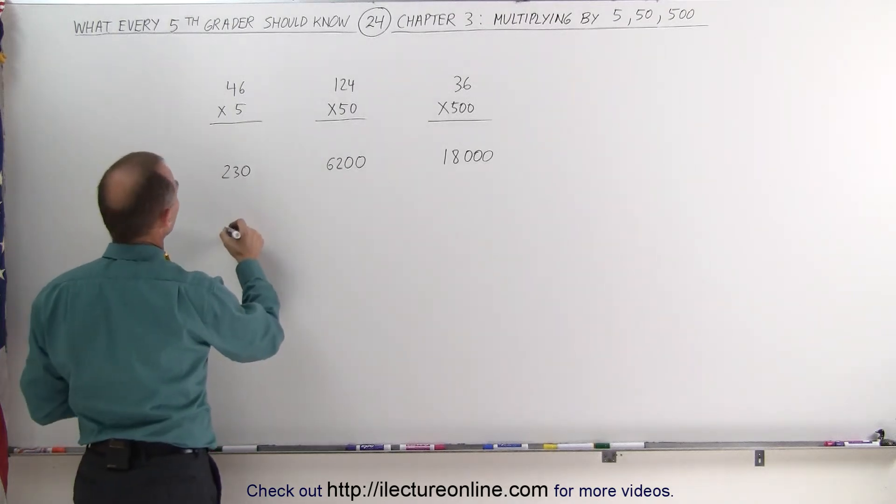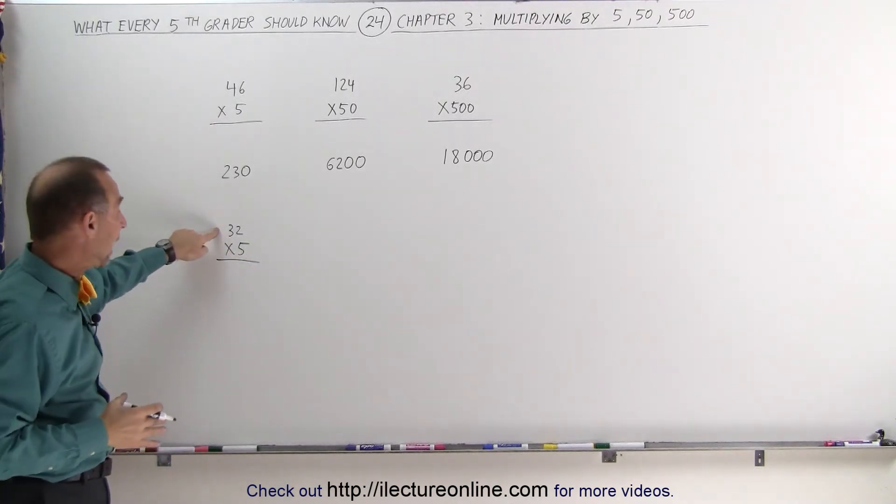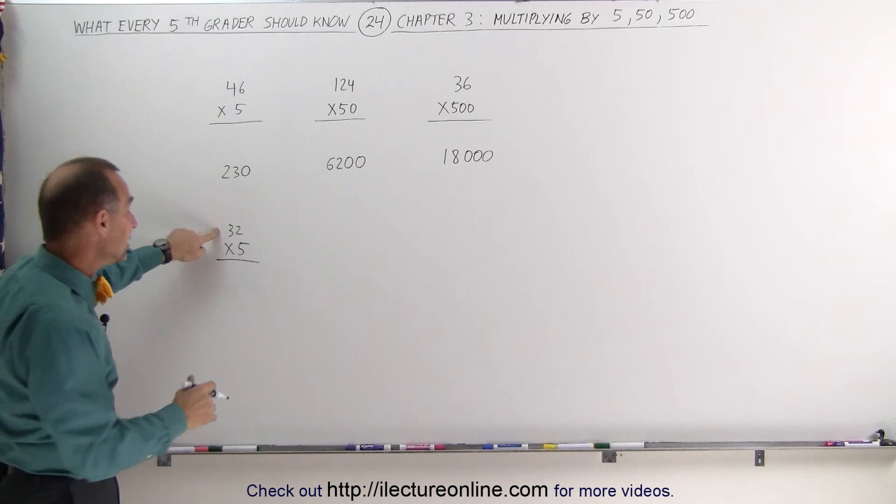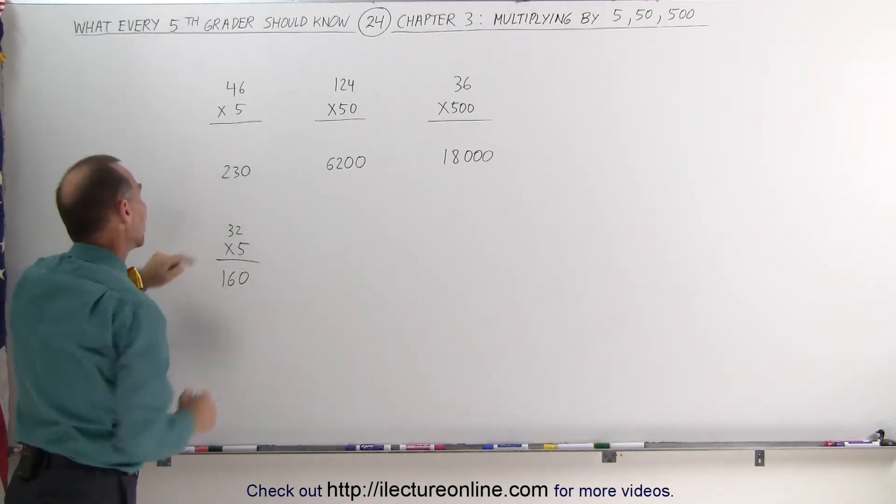Let's say 32 times 5. I take 32 and divide by 2. Half of 32 is 16. Then add one more 0 because now I'm multiplying times 10 and I get 160.